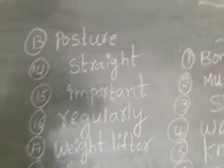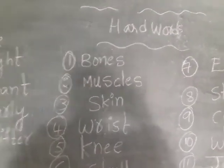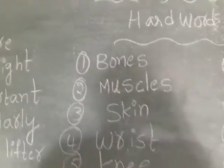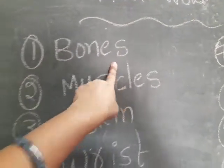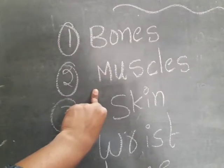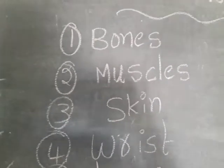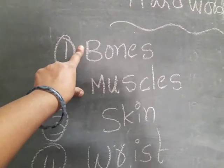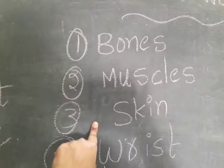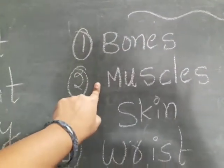Okay children, once again I repeat. Total hard words for bones and muscles. B-O-N-E-S. Bones. We know, children, how many bones are in our body? Two hundred and six bones. M-U-S-C-L-E-S. Muscles. How many muscles in our body? More than six hundred muscles. Our body is made up of skin, bones and muscles. Bones and muscles both make up the human body.